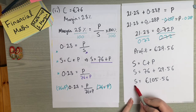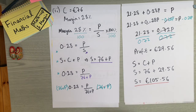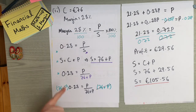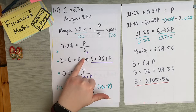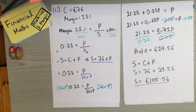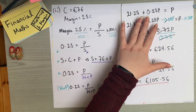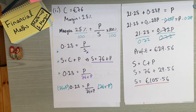So €105.56 is the answer to part two. With problems where you're only given the margin and the cost price, substituting S = C + P is the key step. It looks messy at first but just keep rearranging until you get the profit by itself. Normally with markup and margin questions, you need to find the profit before you can find anything else.